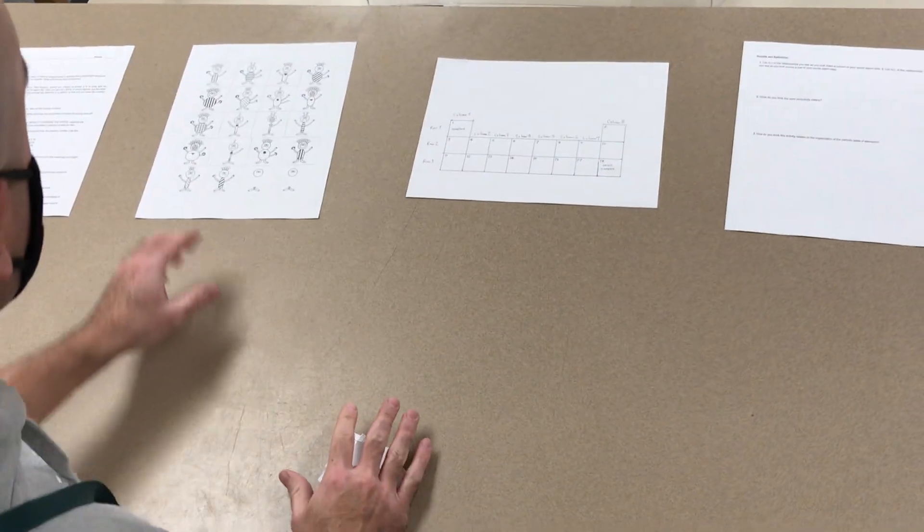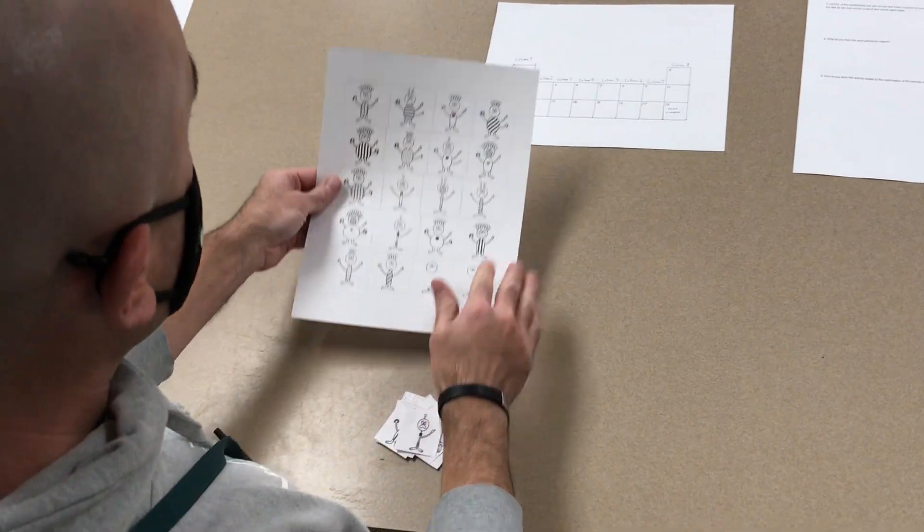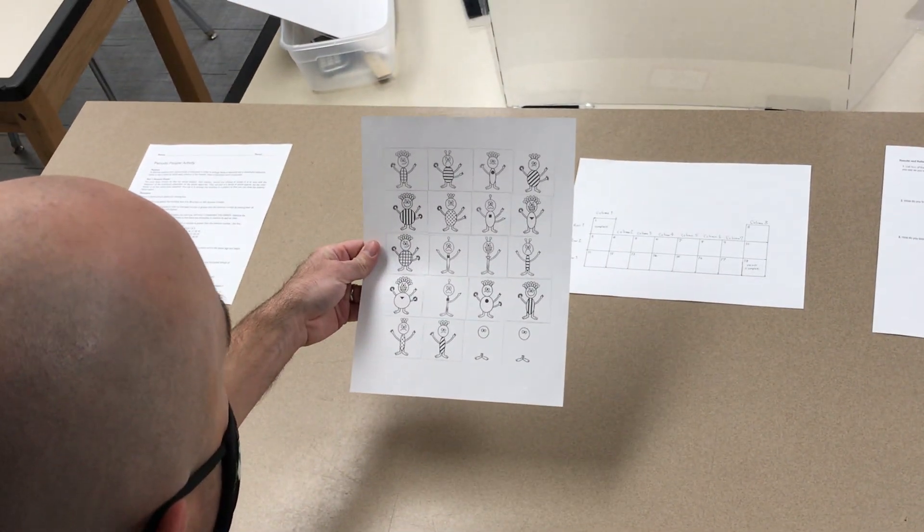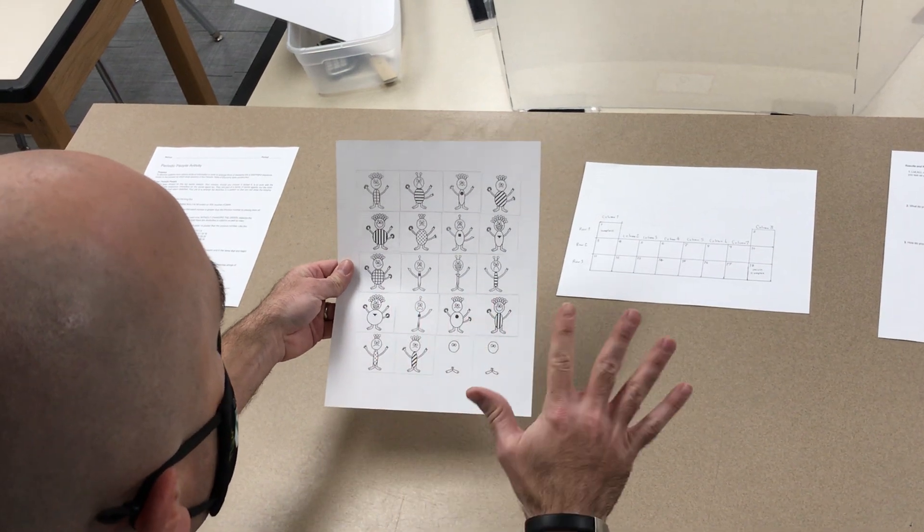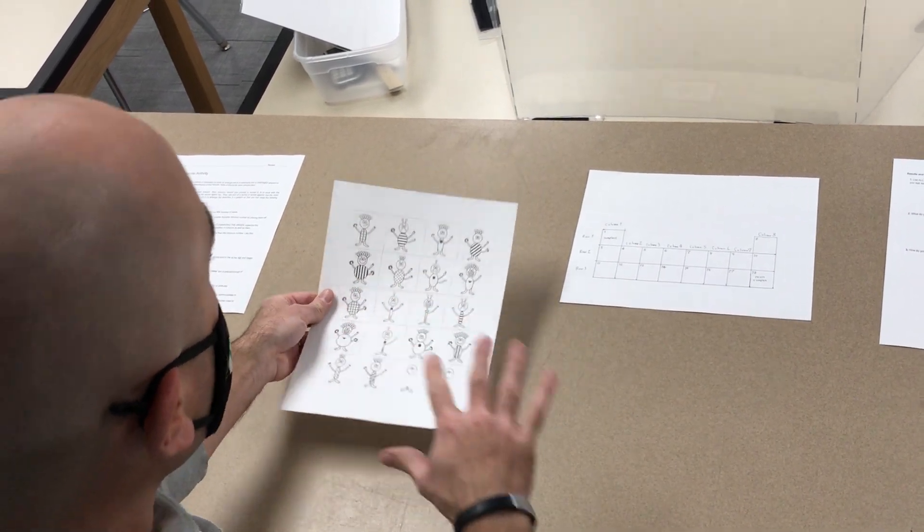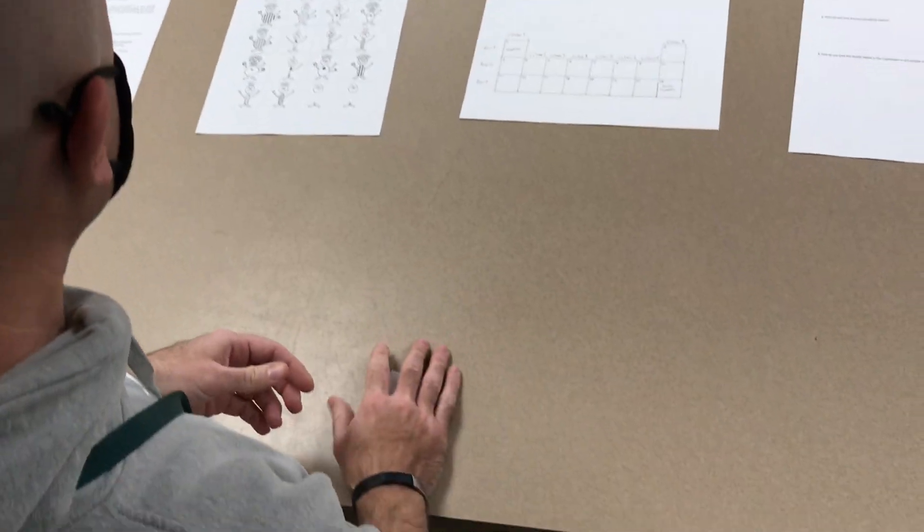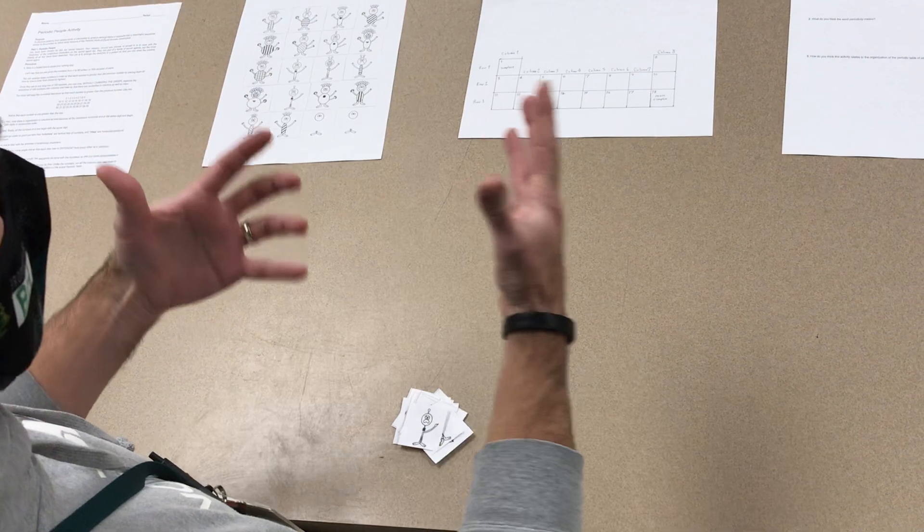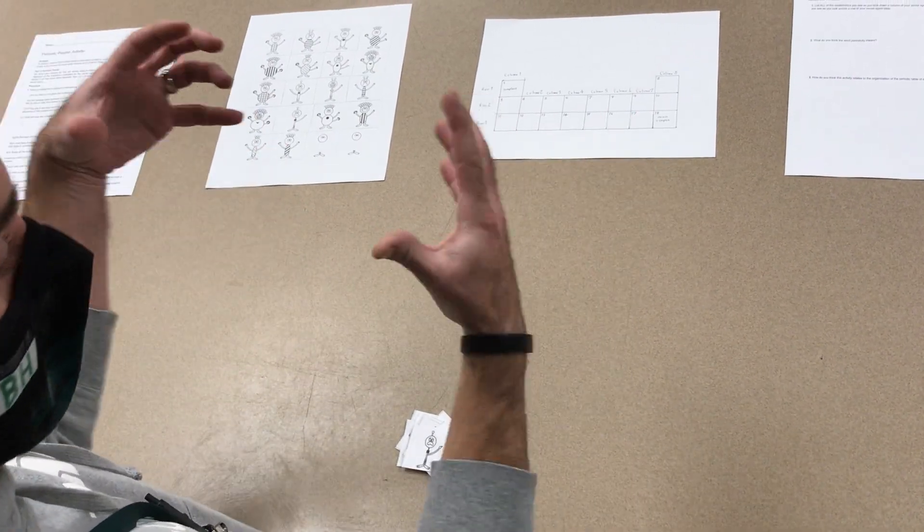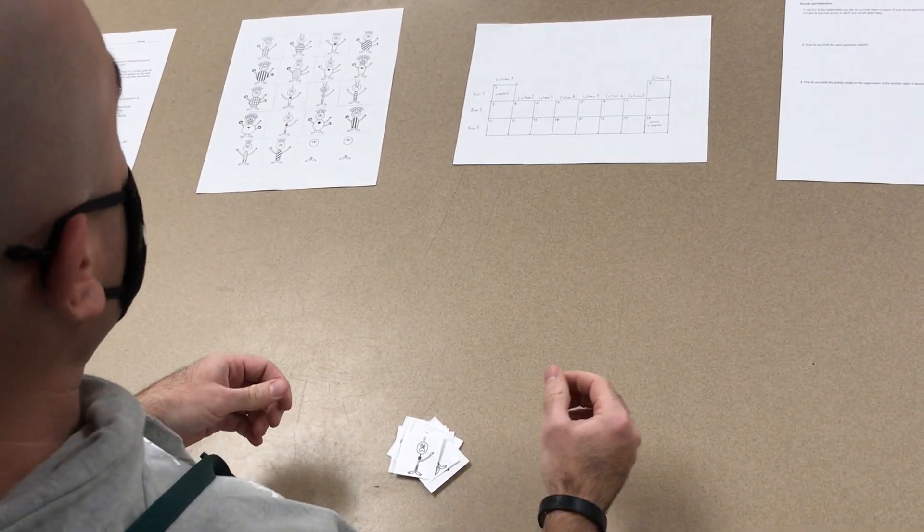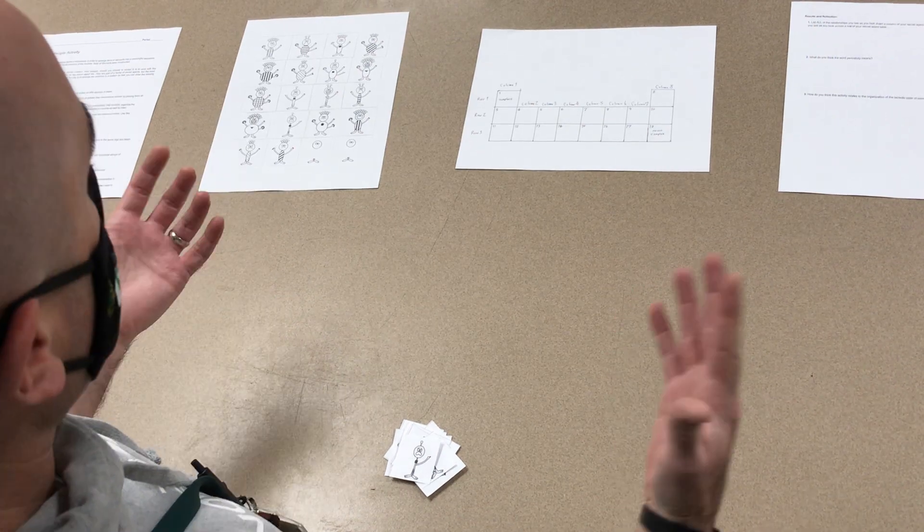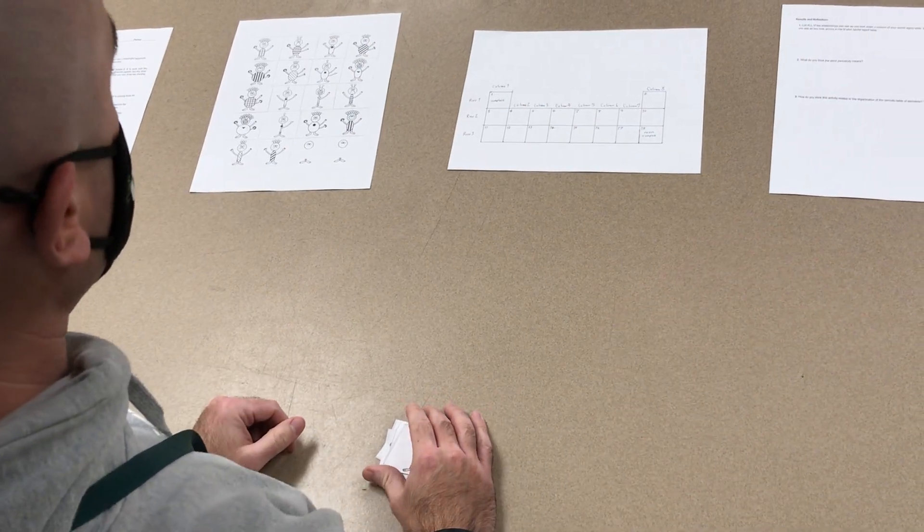So our challenge is going to be to take this random set of pictures and try to arrange it in order based on similarities. Because that's really how the periodic table is set up - it's based on similarities. Elements that have more in common with one another are closer together on the table, and elements that are farther apart have maybe a little less in common with one another.